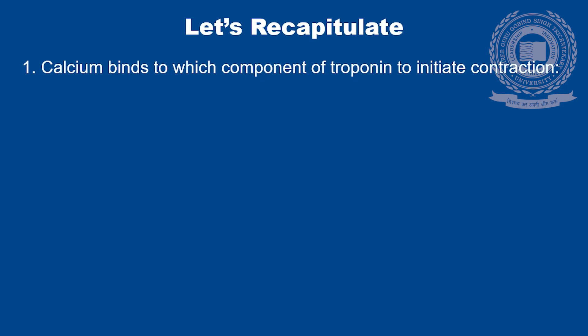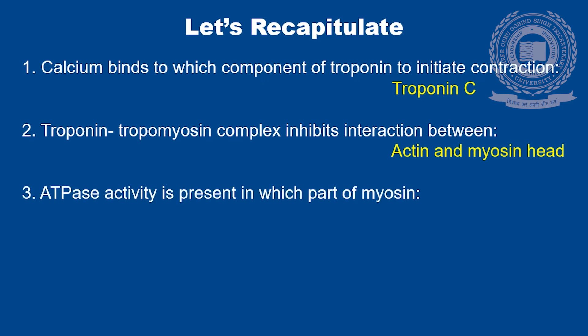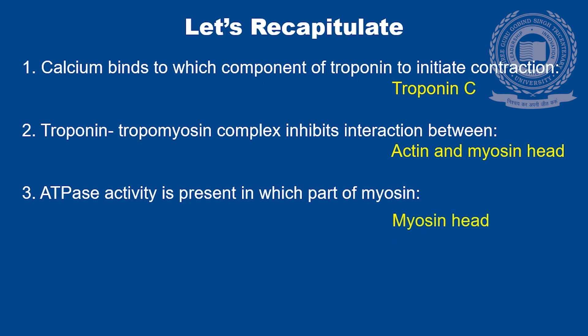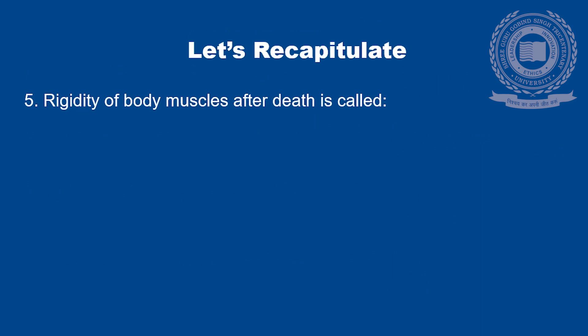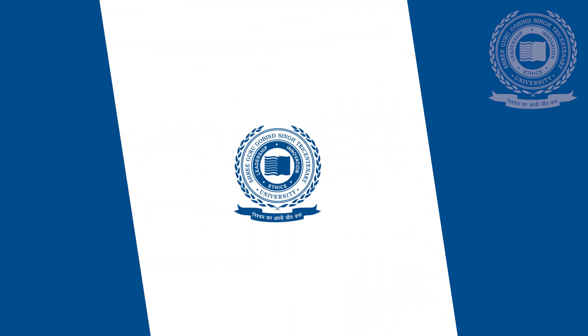Let's recapitulate. Calcium binds to troponin C to initiate contraction. The troponin-tropomyosin complex inhibits interaction between actin and myosin head. The energy required for power stroke is stored as ADP and inorganic phosphate. Rigidity of body muscles after death is called rigor mortis, and the state of contracture in rigor mortis is due to loss of ATP.